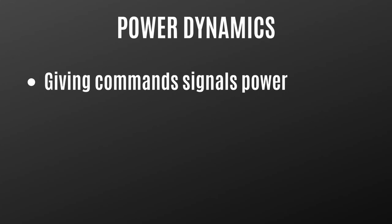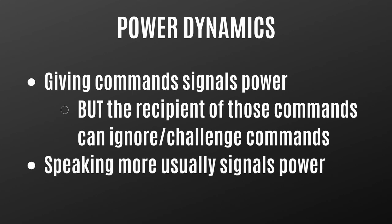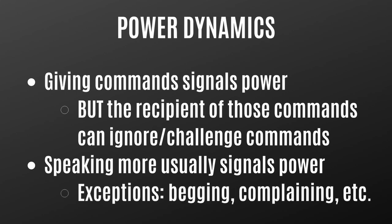The second technique is power dynamics — who controls the conversation? Whenever characters are talking, someone has more power than the others. A character giving commands usually signals they're in power; however, if the receiving character ignores those commands, that can signal a shift in power. Usually the person who speaks more has the power, because they're giving instructions or pushing forth their ideas and worldview. However, sometimes the opposite is true — the character who speaks more is actually the weaker person, especially when they're begging for something or complaining.